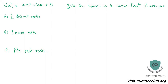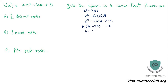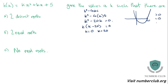Next: h of x equals kx squared plus kx plus 5. This is more difficult because k appears more than once. The discriminant is b squared minus 4ac, which is k squared minus 4 times k times 5, giving k squared minus 20k. Let it equal 0: k times (k minus 20) equals 0, so k equals 0 or k equals 20. It's u-shaped because of the k squared term. Always graph your discriminant.